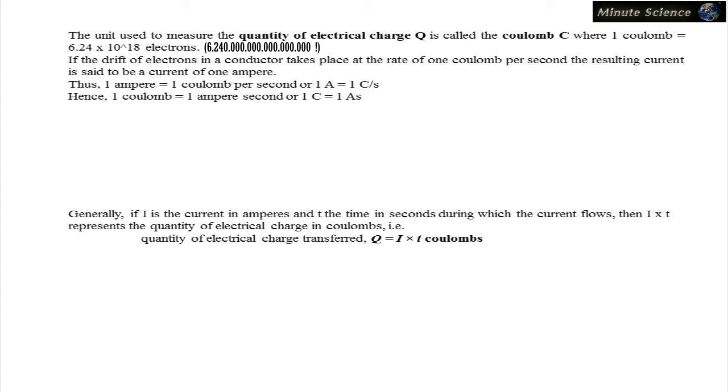If the drift of electrons in a conductor takes place at the rate of 1 Coulomb per second, the resulting current is said to be a current of 1 Ampere. Thus, 1 Ampere equals 1 Coulomb per second. Hence, 1 Coulomb equals 1 Ampere second.